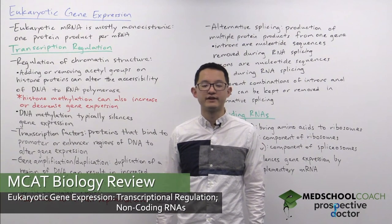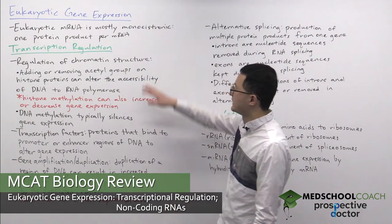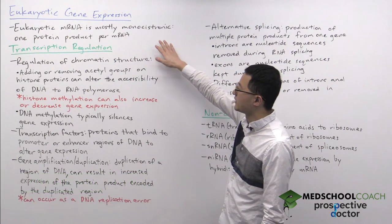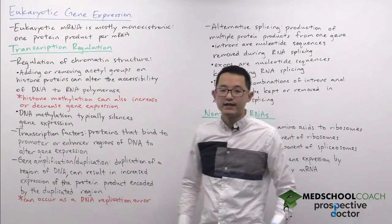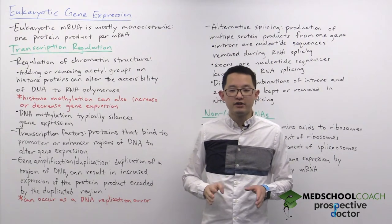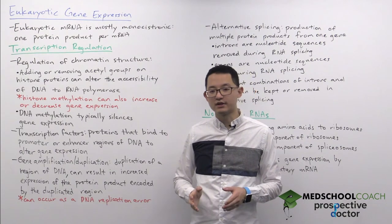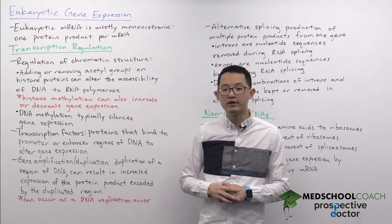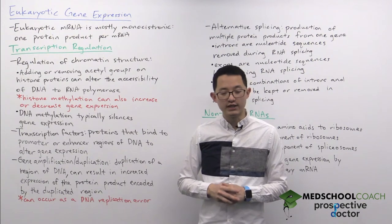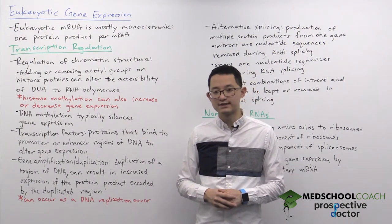In this video, we're going to go over eukaryotic gene expression. The first thing I want to start off by discussing is the fact that eukaryotic mRNA is mostly monocistronic. That means that each mRNA molecule can only code for a single protein product. This is different from prokaryotes that have polycistronic mRNA, where each mRNA molecule can encode for multiple protein products.